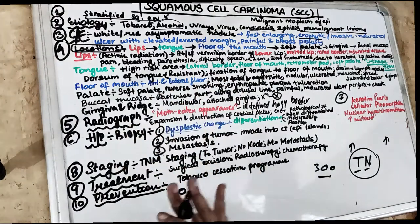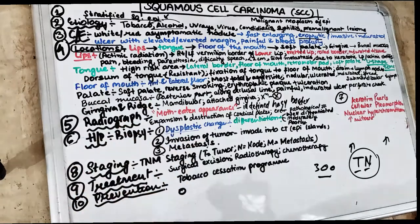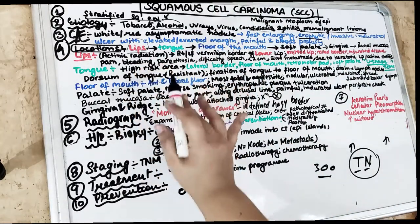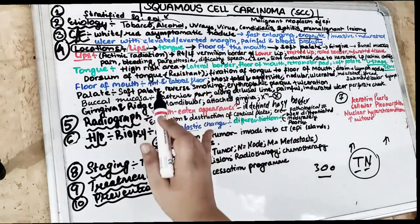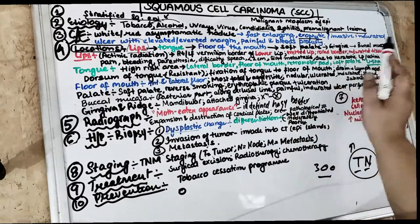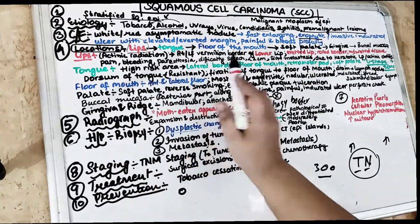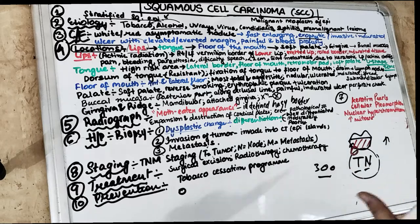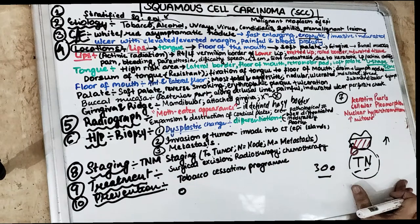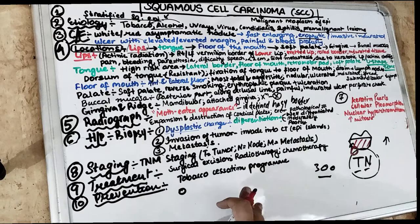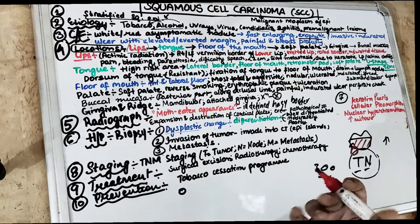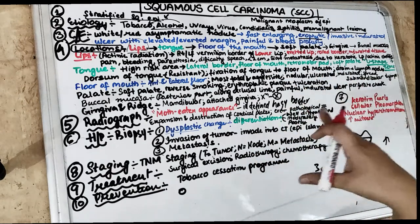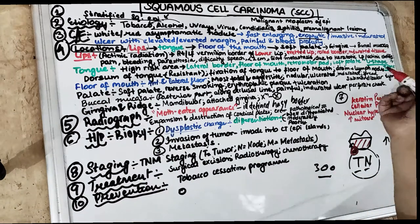It is painful in some cases and painless in others, and it bleeds profusely. Locations for squamous cell carcinoma include the lip, tongue, and floor of the mouth. Majorly, SCC is seen in the lips — specifically the lower lip. Then the tongue, particularly the lateral border of the tongue. The vermilion border of the lower lip is affected due to actinic radiation — there can be an everted, rolled-out, indurated ulcer. There may be pain, bleeding, paresthesia, and difficulty in speech due to induration. This lesion can grow up to 2 centimeters, with slow metastasis in SCC of the lip due to keratotic leukoplakia as well as actinic cheilitis.